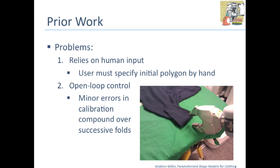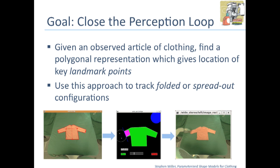A few problems with this work, though. One was that it relied on human input, so a user had to specify that polygon by hand. A second one was it used open-loop control. So once the polygon had been specified, the robot would blindly continue folding and assume it had gotten 100% accuracy. The result being that minor errors in calibration would compound over successive folds. So our goal in this work is to close that perception loop — given any observed article of clothing, we want to find a polygonal representation which gives the location of these key landmark points so we know how to fold it.